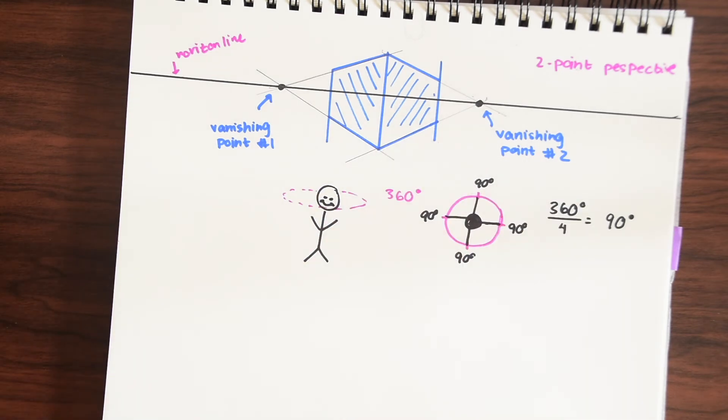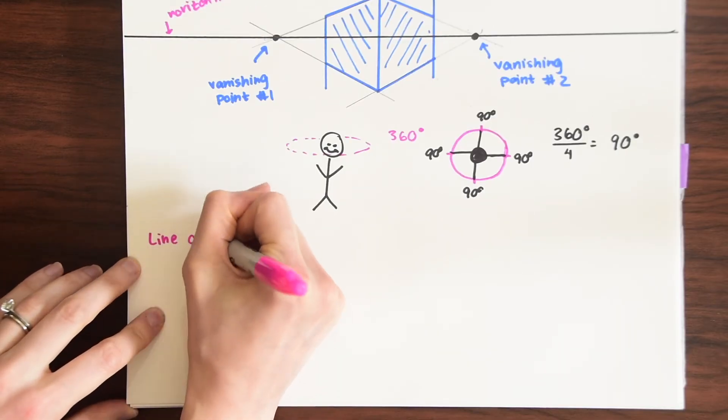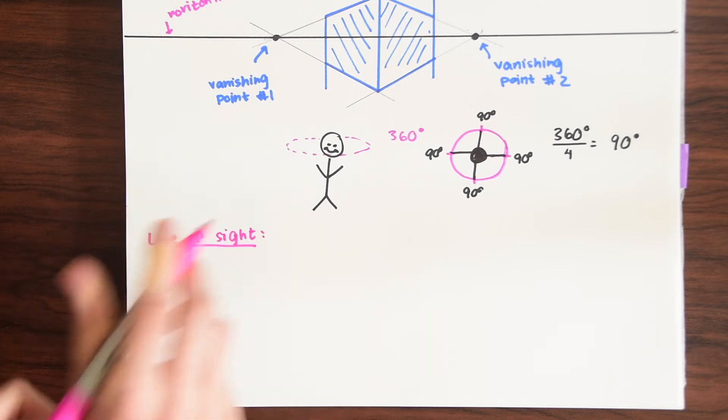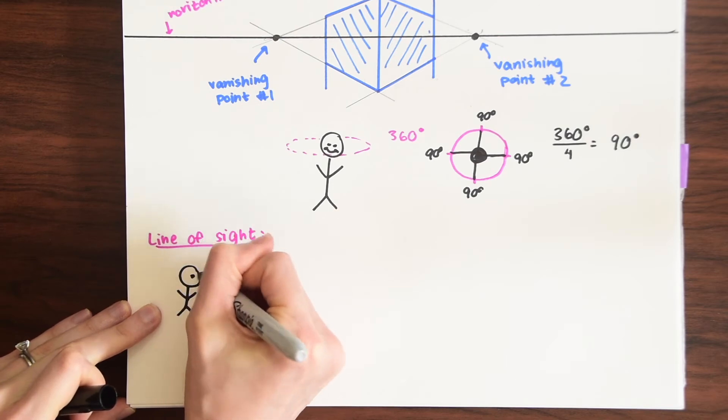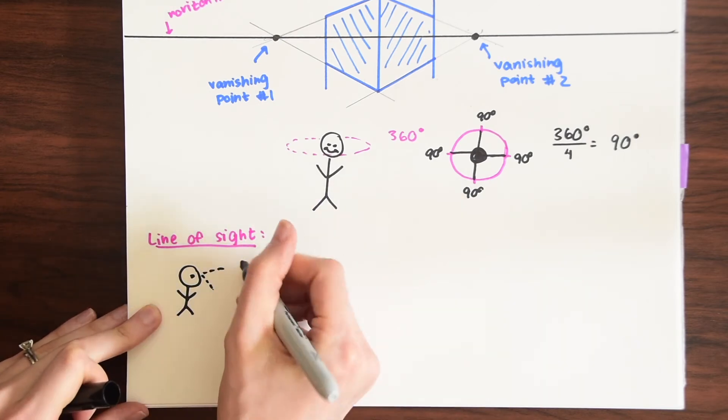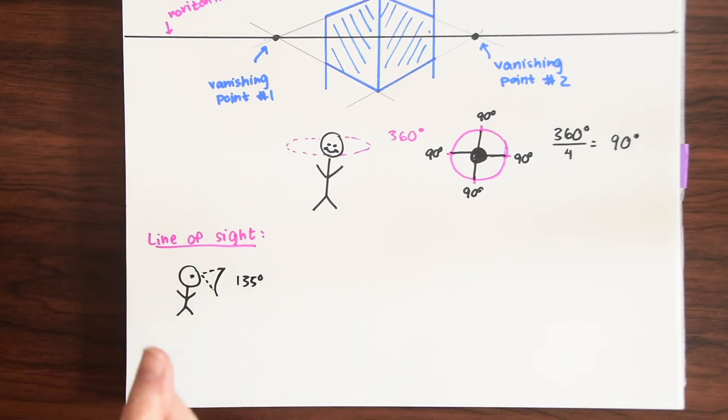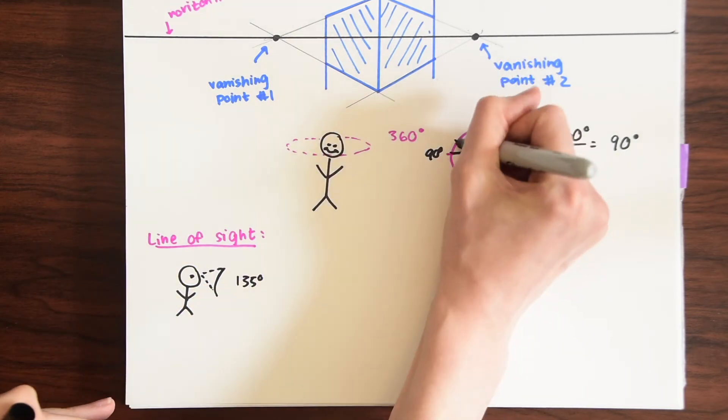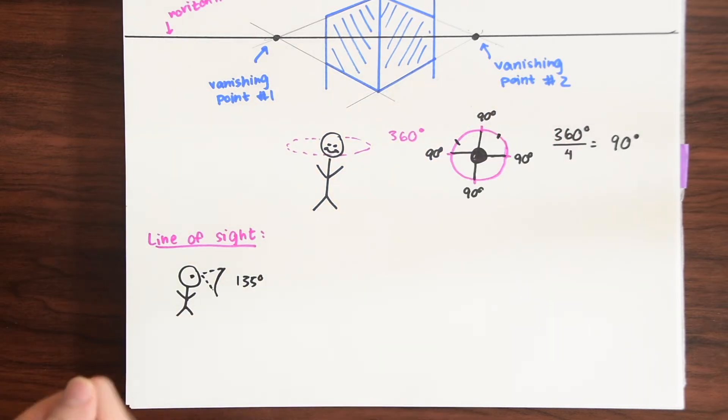Another interesting thing about perspective drawing is something called line of sight. So what this tells us is that at any one point what we see ourselves what do we see what's our angle what can we see, we see up to 135 degrees. So even though there's a whole entire circle around us we only see like a part of it. So let's say we only see like 135 degrees maybe we only see this part of it.